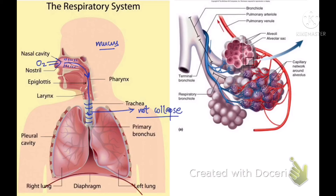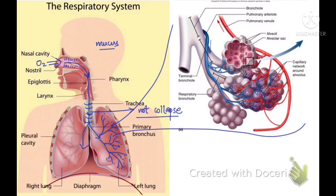After passing through the trachea, it divides into two parts called bronchi. Each bronchus then divides into many branch-like structures called bronchioles. At the end of every bronchiole there is a balloon-like structure called an alveolus. The bronchi move into two separate lungs and further divide into bronchioles, and at the end of every bronchiole we have alveoli. Once air reaches the alveoli after passing through all these stations, exchange of gases takes place.